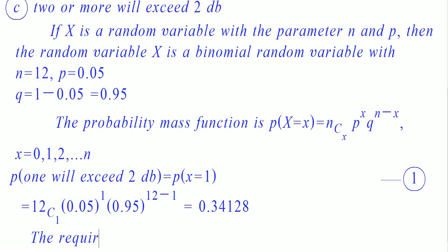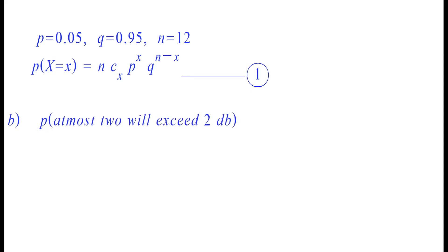The second part of the question is to find the probability that out of 12 amplifiers, at most 2 will exceed 2 decibels. Here, the term 'at most' implies the maximum value x can have. Whenever we encounter the term 'at most', remember that it is the maximum value x can have. Therefore, the probability of at most 2 will exceed 2 decibels is equal to probability of x less than or equal to 2.